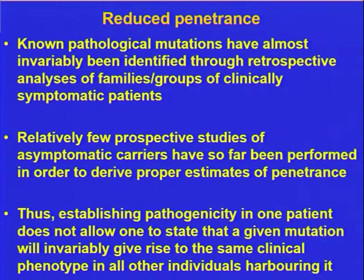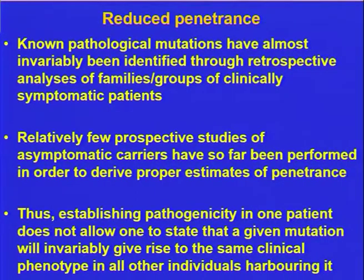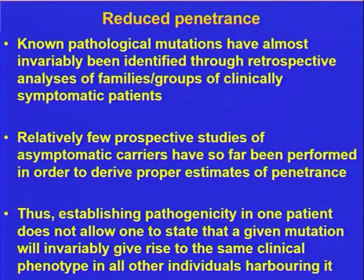What we're doing increasingly is looking prospectively for those mutations in asymptomatic carriers — apparently healthy individuals like those in the 1,000 Genomes Project dataset. When you look for apparently pathological mutations in a normal population, you're performing the analysis without the bias inherent to retrospective studies. Establishing pathogenicity in one patient really doesn't allow you to state with any confidence that that mutation will invariably give rise to the same clinical phenotype in other individuals who possess it.